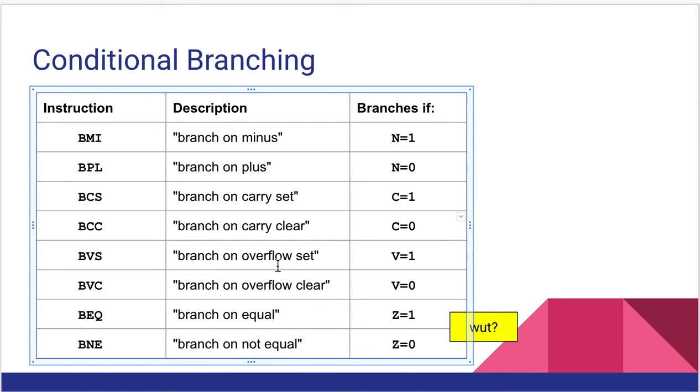BVS and BVC do the same thing for the overflow bits. So branch on overflow set, V equals one. Branch on overflow clear, V equals zero. Those should be pretty straightforward.